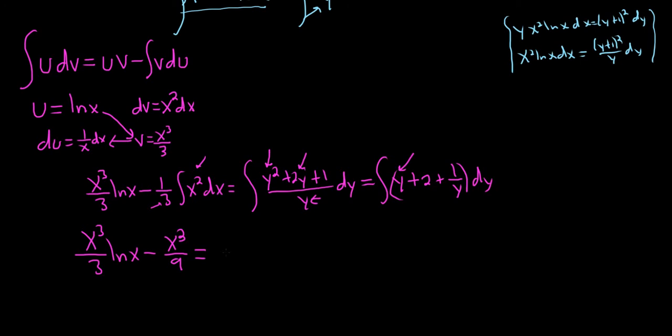Integrating y is going to give us y squared over 2. Integrating the 2 is going to give us 2y. Integrating 1 over y is going to give us the natural log of the absolute value of y. And now let's go ahead and put our capital C.